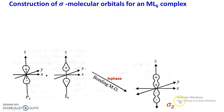Why sigma? Because the overlapping takes place along the z-axis, and therefore this bonding molecular orbital is designated σz.